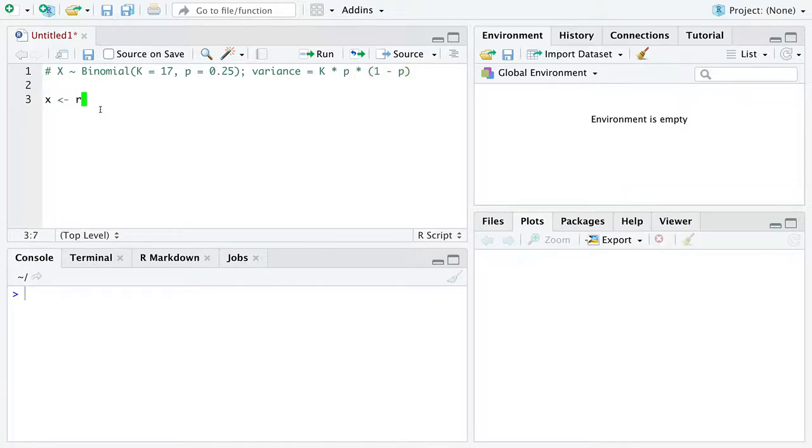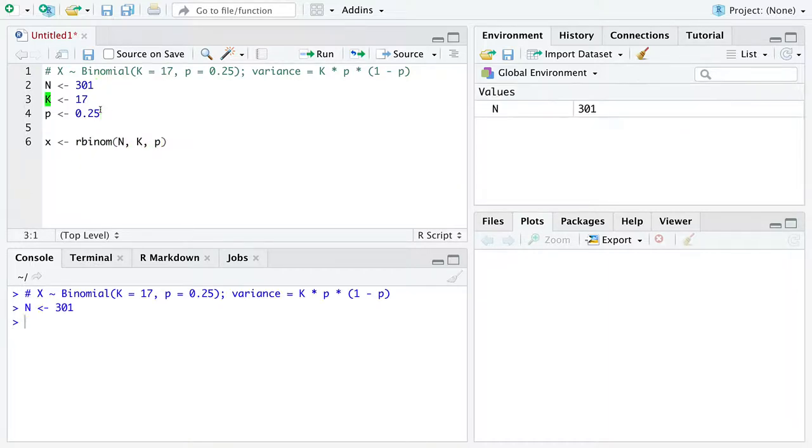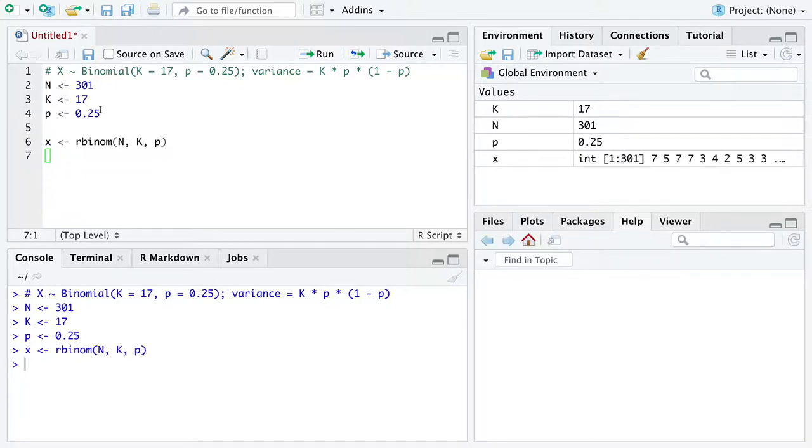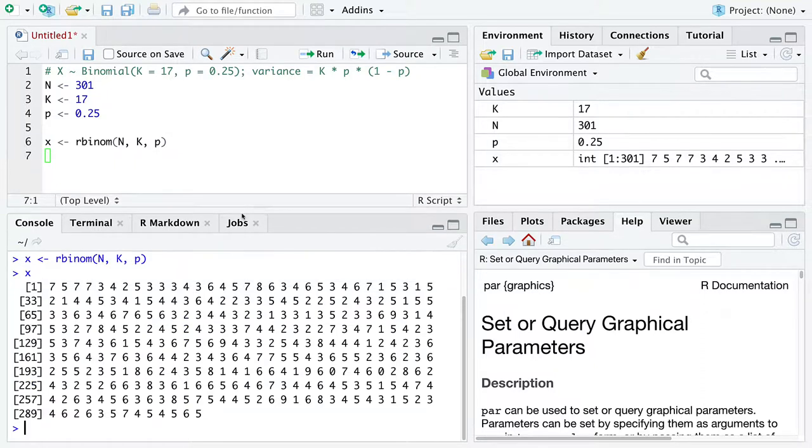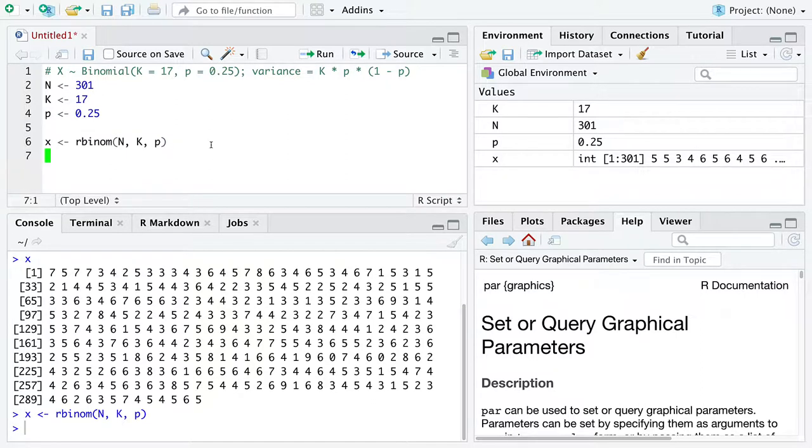So if we just generate a bunch of, let's say 301, because why not, a bunch of data from a binomial distribution with k equal to 17 and the probability of success equal to 0.25. Then we're going to get a bunch of integers that look like random numbers from 0 to 17, but the values from basically 10 and up aren't likely to happen because the probability of observing a 1 is so low. So if we just, oops, I generated the data again. That's okay. It's not going to hurt anything.